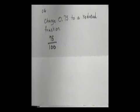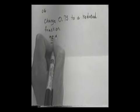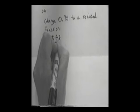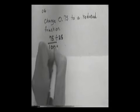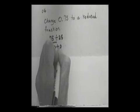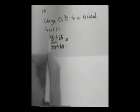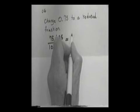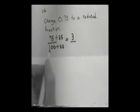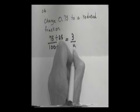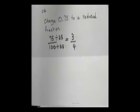Now, since I said I wanted a reduced fraction, we want to reduce this. You could start off and reduce by 5s, but I think 25 will go into each part, so I'm going to go ahead and reduce with 25. 75 divided by 25 is 3, and 100 divided by 25 is 4. So the decimal 0.75 means the very same thing as the fraction 3/4.